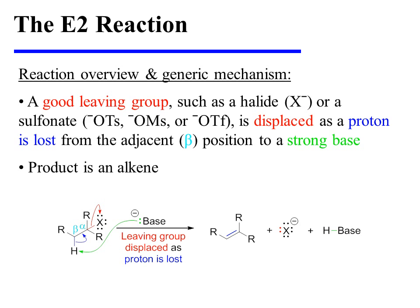In the E2 reaction, a good leaving group, such as a halide or a sulfonate, is displaced as a proton is concurrently lost from the adjacent beta position to a strong base. The product is an alkene.